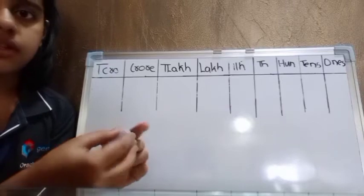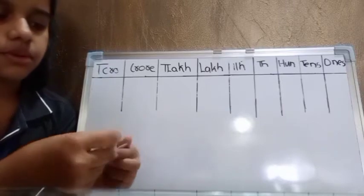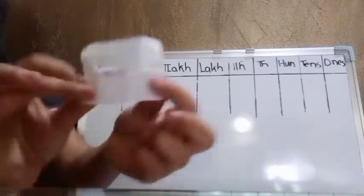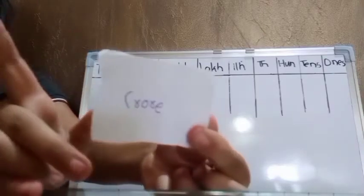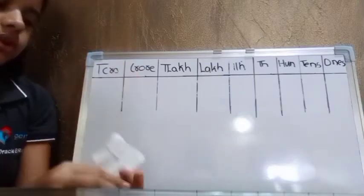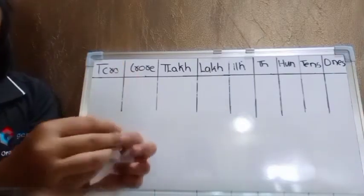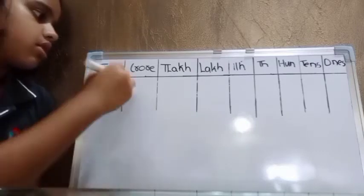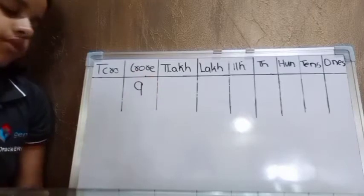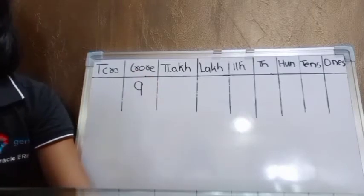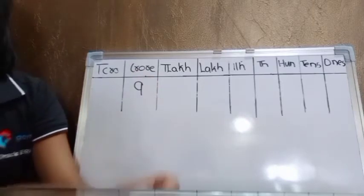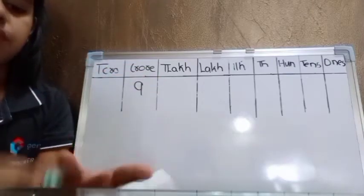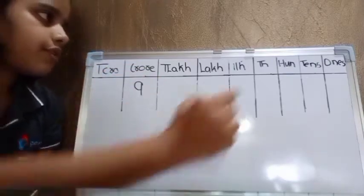Now we have to open the first blank chit. We have to see the place value which it has — so it has crores. So we have to write number 9 in the crores place. Next is thousands place. In thousands place we have to write number 5.